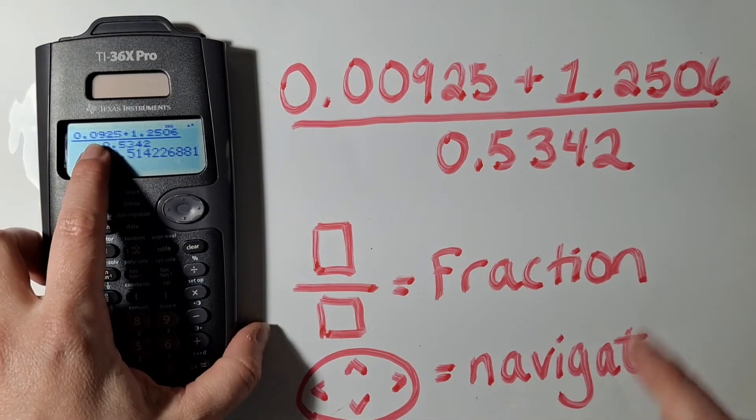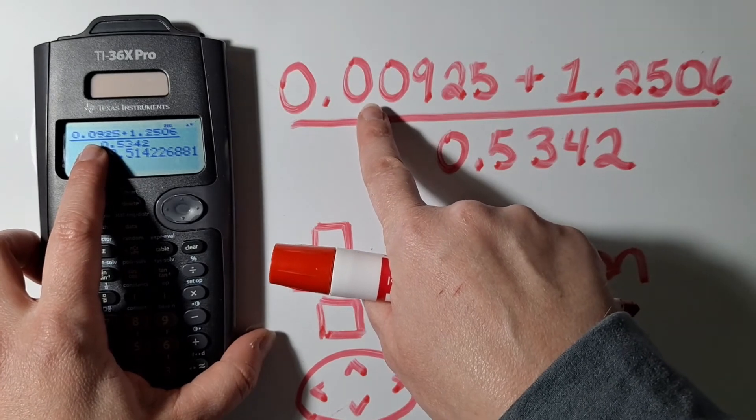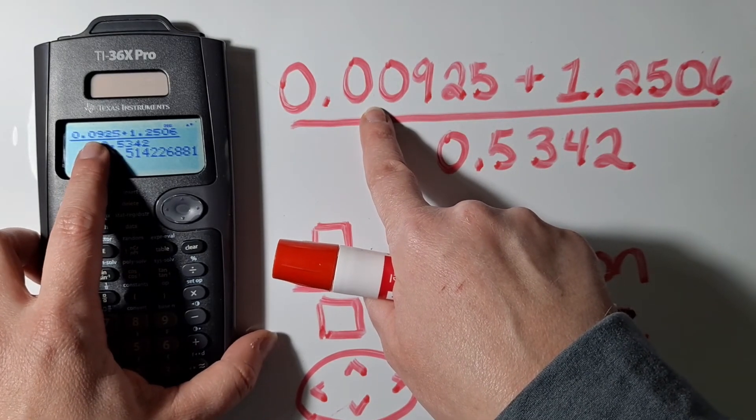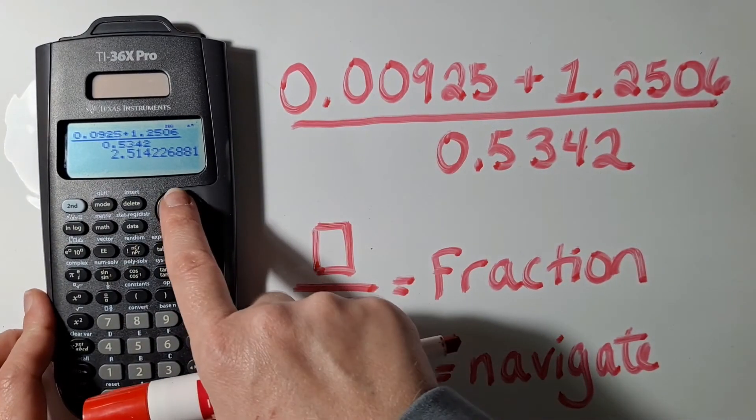But then as I'm looking at this, I noticed that I wanted to type in two zeros, and I only typed in one. So how can I go back and fix that?